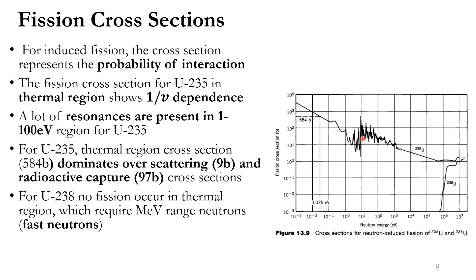There are many spikes representing resonances in the region from 1 to 100 electron volts for uranium-235. Another important peculiarity for uranium-235 is that the thermal region fission cross-section — the thermal region probability for nuclear fission — dominates over the scattering probability and radiative capture probability.